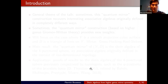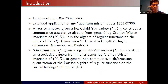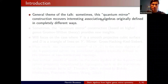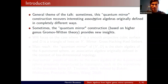More concretely, in the classical story one glues copies of (ℂ*)². In the quantum mirror story, one glues a quantum version of (ℂ*)²: rather than the algebra of Laurent polynomials in two variables x and y, one has an associative algebra generated by x and y satisfying xy = q·yx, where q is a deformation parameter. The general theme is that this quantum mirror construction sometimes recovers interesting associative algebras originally described in completely different ways, and provides new insights about them.